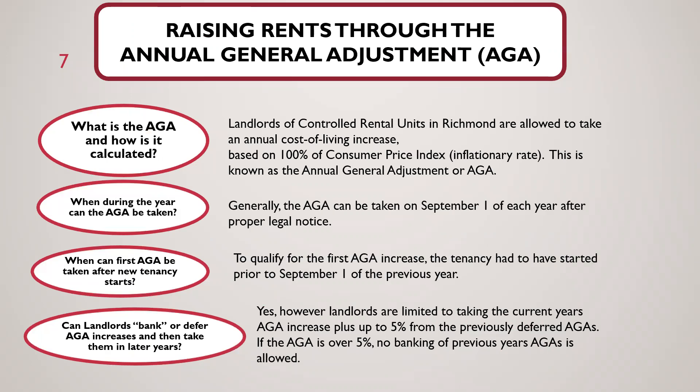Let's talk more about raising rents through the Annual General Adjustment. What is the AGA and how is it calculated? As mentioned, landlords of controlled rental units in Richmond are allowed to take an annual cost of living rent increase. That rent increase is based on 100% of the consumer price index or inflationary rate for the Bay Area — this is known as the Annual General Adjustment or AGA. The AGA can generally be taken on September 1st of each year after the landlord provides proper legal notice.